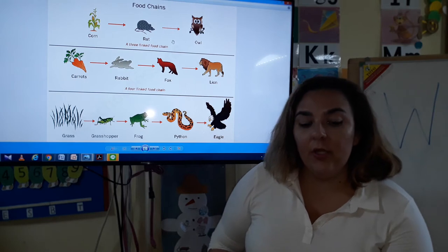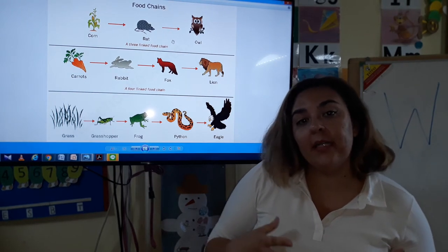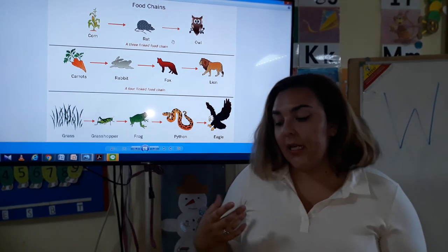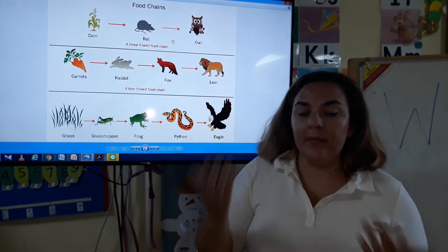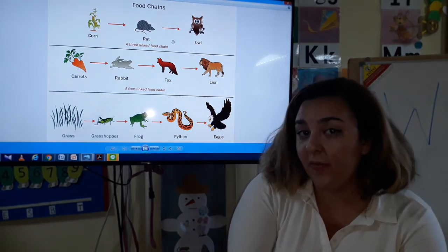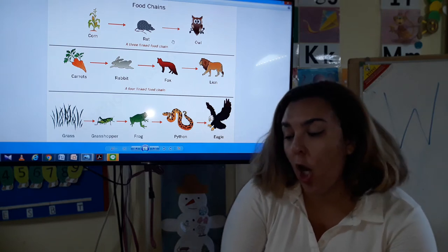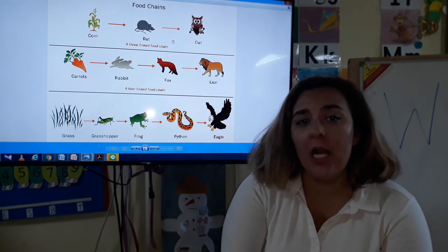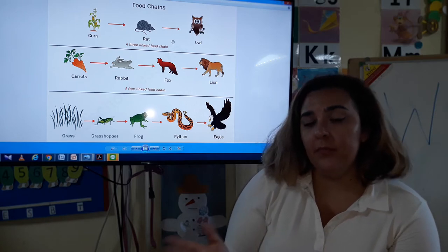It starts at the bottom with vegetables, fruits, nuts - things that grow in the ground. Then an animal that is a herbivore. Remember that word from yesterday: herbivore. H-E-R-B. They only eat plants. Rabbits, grasshoppers, and rats are herbivores.